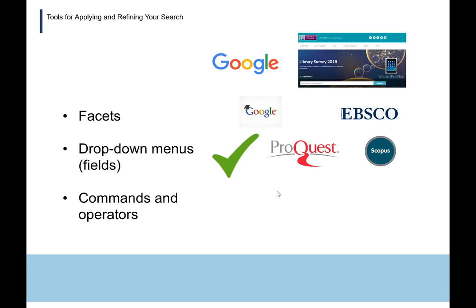When you've worked out keywords and thought about the databases or search engines you want to apply those keywords to, any of those systems are going to have a collection of tools you can use to help refine your search — in conjunction with those keywords. I've collected these as categories and called them facets, which are otherwise known as filters, drop-down menus, and commands and operators.